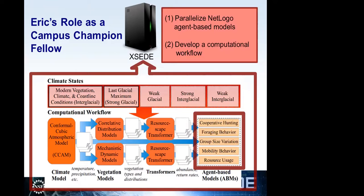Those vegetation outputs need to be translated into what Curtis and his team call resource scapes — what are the actual resources that come out of this vegetation in terms of potential for tools, food, and game? From those, we get abundance rates and vegetation return rates — for example, if you're going to go hunting, what's your chance of actually getting an animal? All of that data eventually feeds into agent-based models — I emphasize models because there are multiple different perspectives on some of the human behavior and movement patterns.